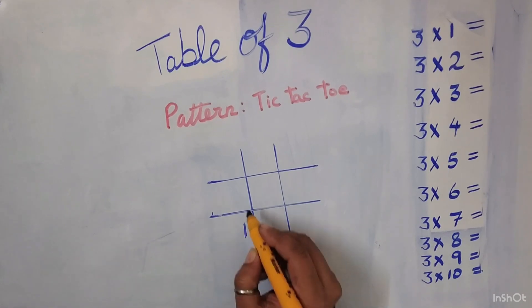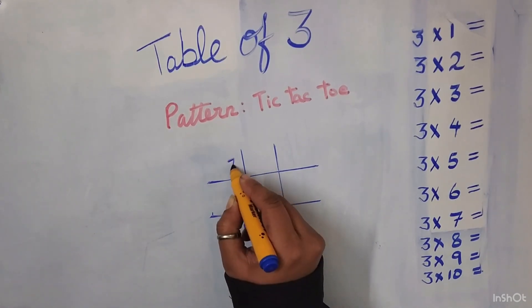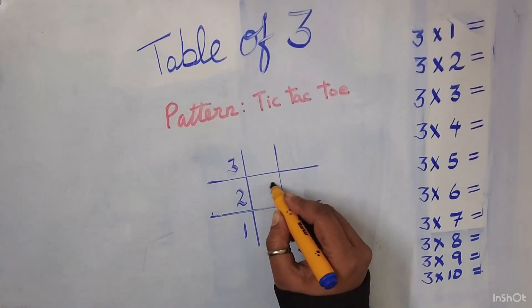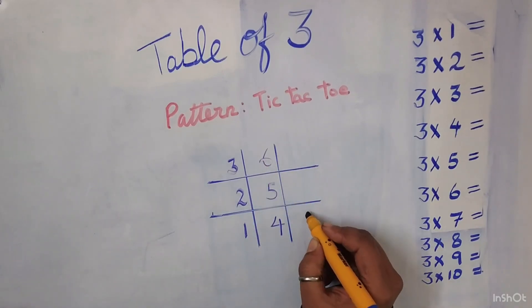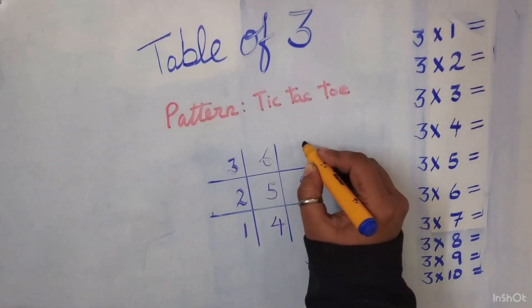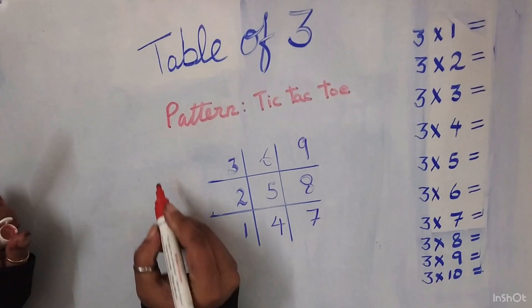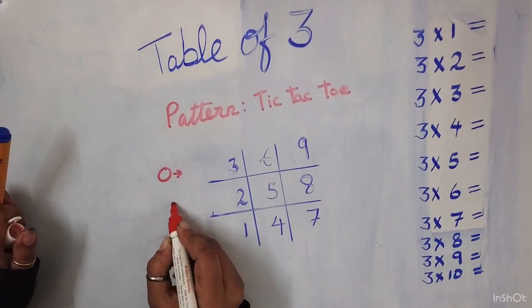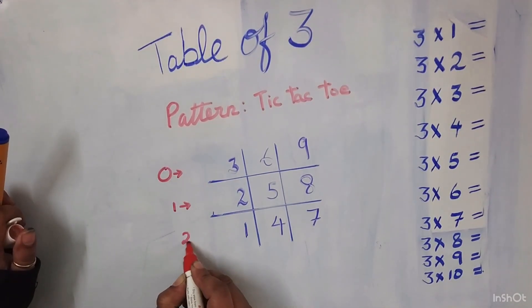We will enter the numbers in the tic-tac-toe: 1, 2, 3, 4, 5, 6, 7, 8, 9. Now we will write the magic numbers for the first row 0, second row 1 and the third row 2.